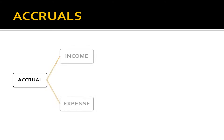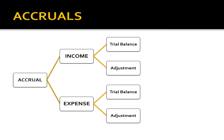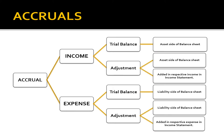Moving on to accruals — accruals have been classified into two categories: accrual income and accrual expenses. If accrual income is given in the trial balance only, it will be shown on the asset side of the balance sheet. If it is given in adjustment, it will be shown on the asset side of the balance sheet and added to the respective income in the income statement. For accrual expenses, if shown only in the trial balance, it will be shown on the liability side of the balance sheet. If given in adjustments, it will be shown on the liability side and added to the respective expense in the income statement.